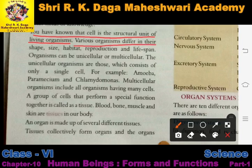Various organisms differ in their shape, size, habitat, reproduction and lifespan. All organisms differ in every aspect - a cat's size is different, a dog's size is different, an elephant's size is different. Similarly, their lifespan is different.